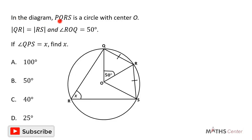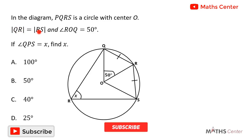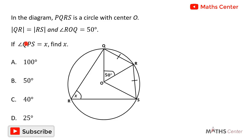In the diagram, PQRS is a circle with center O. The length of QR is equal to the length of RS, and angle QOR is 50 degrees. If angle QOS is X, find X. This is a multiple choice question, so we will solve and then pick the correct option. We are going to use the information on this diagram to find X.